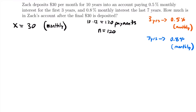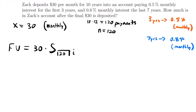How do we calculate the future value of this annuity? Your first thought is: future value equals 30 times S_{120|i}, but the interest rate is not consistent for all 120 payments, so this won't work. We can't use this notation with N equal to 120 — we're going to have to split this up. We'll calculate the future value of the payments made for the first three years and the future value of the payments made for the last seven years, because they have two separate interest rates.